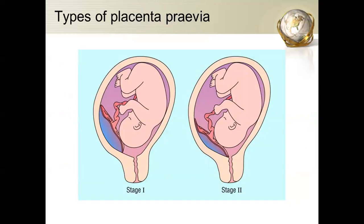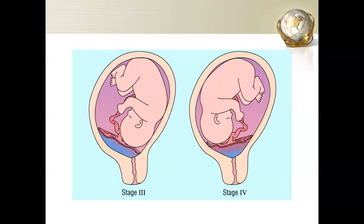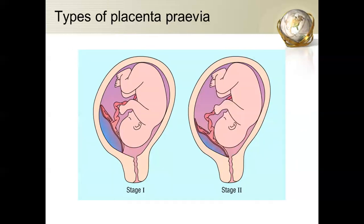There are four types of placenta previa. Stage 1 is low-lying placenta previa, where some part of the placenta lies in the lower uterine segment. Stage 2 is marginal placenta previa, where the placenta extends to the margin of the cervix but does not cover it.